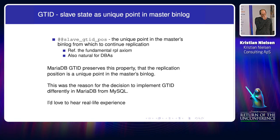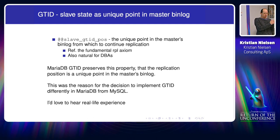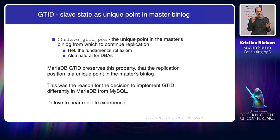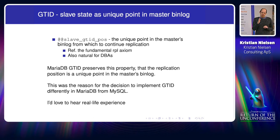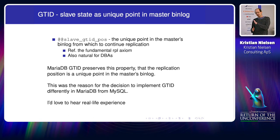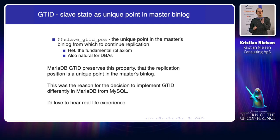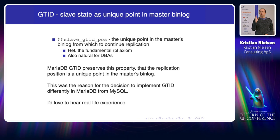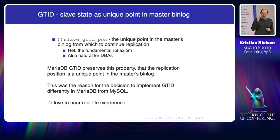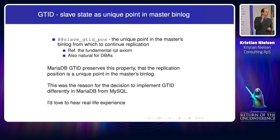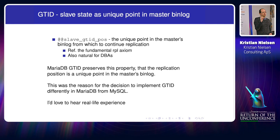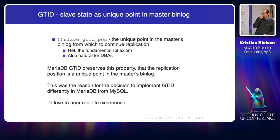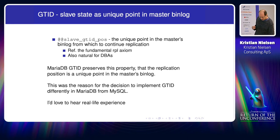Another important point: we have this bin log, and the sequence defines exactly — if you apply transactions in sequence, you get the same data. At every point in the bin log, if you apply transactions T1, T2, T3, the state of the slave after applying those two transactions is identified by a single point in the bin log. You have a single position in the bin log, and it identifies the state of the slave. So the slave can disconnect, remember where it disconnected in the bin log, connect again, and continue from there. That's a very good property.